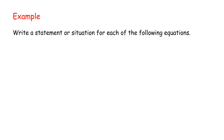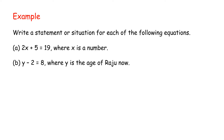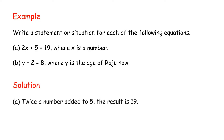Example: write a statement or situation for each of the following equations. (a) 2x + 5 = 19, where x is a number. (b) y - 2 = 8, where y is the age of Raju now. Solution: (a) Twice a number added to 5, the result is 19. (b) Raju was 8 years old 2 years ago.